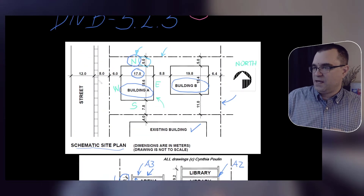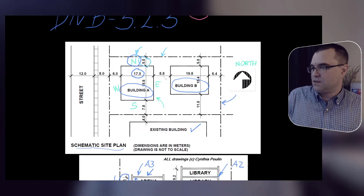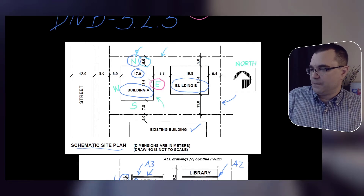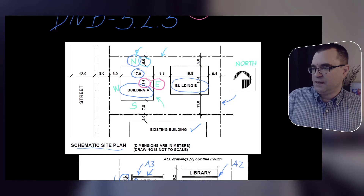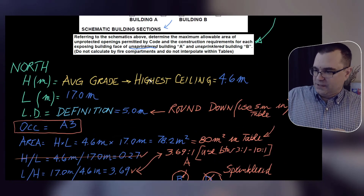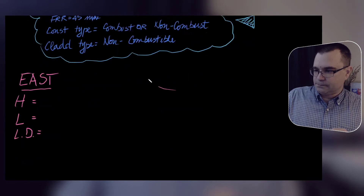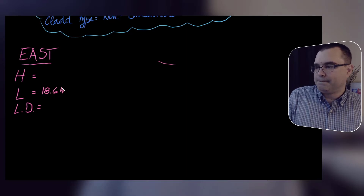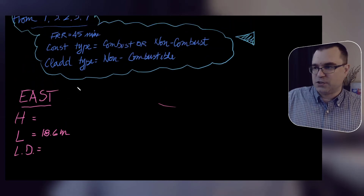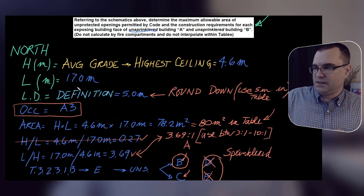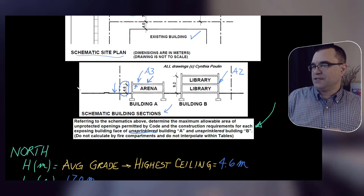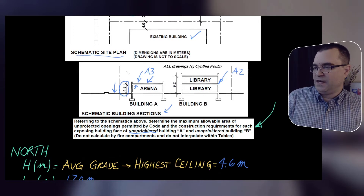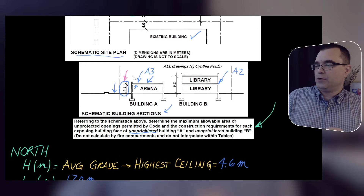The east face of building A is right here. The horizontal dimension is right here: 18.6 meters. The vertical dimension of the east face of building A is still the same because all of building A is the same: 4.6 meters.